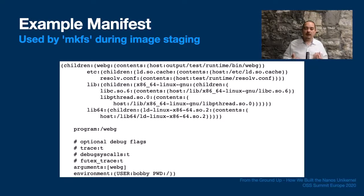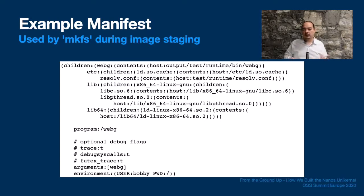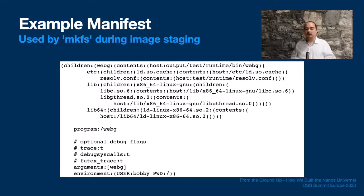When Nanos boots, the log is parsed from storage and a root tuple is created in the system. A tuple is a key-value store, and values can be either tuples or other data types. For now we just have tuples and buffers, where buffers may contain text strings or serialized types like integers. This root tuple is the sole source of Nanos configuration, including the file system tree and file metadata — from the kernel's point of view, the root tuple describes the system in its entirety.